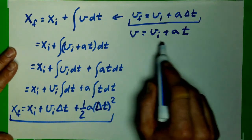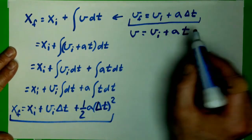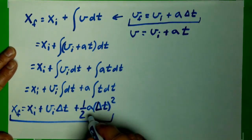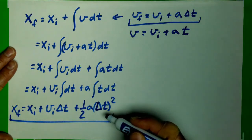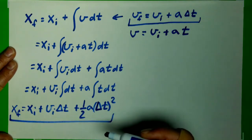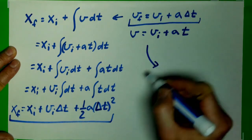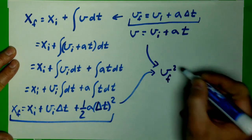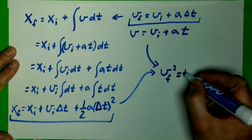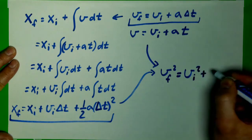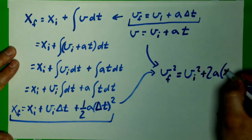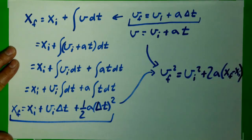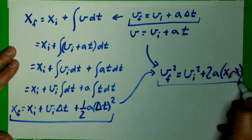And so basically, if you take this equation and solve this for time, plug it in, sorry, this one, solve it for your time interval, plug it in here, you eliminate the time, and now I have an equation that just has position, velocity, and acceleration. And after simplification, taking these two and simplifying it, you end up with another equation that relates to the square of the velocities with the acceleration and the displacement. This is what we call our third kinematic equation.